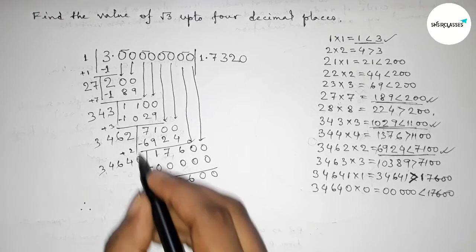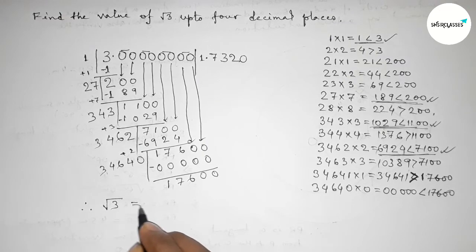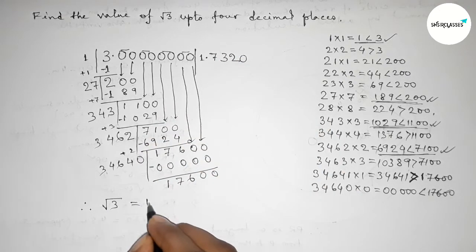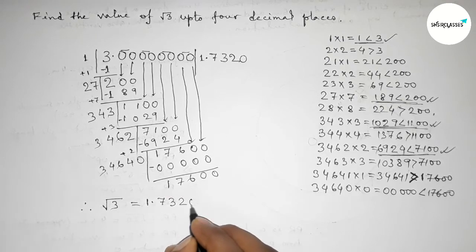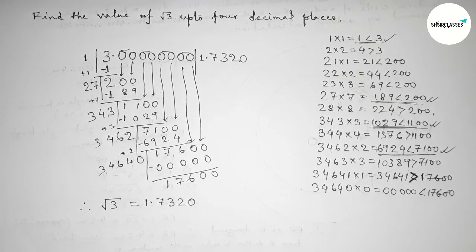Therefore the value of root 3 up to 4 decimal places is 1.7320. That's all. Thanks for watching — if this video is helpful to you, please share it with your friends.